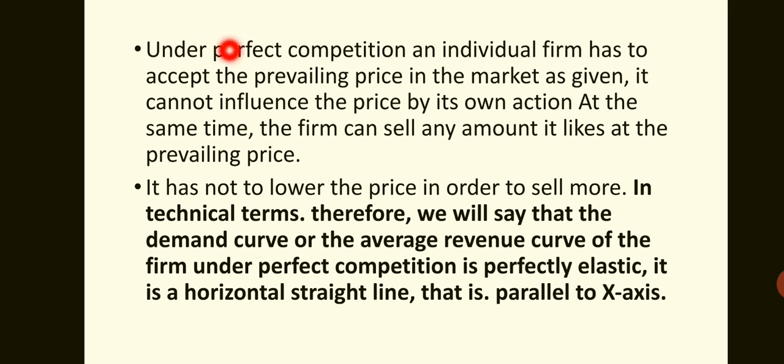Under perfect competition, an individual firm has to accept the prevailing price in the market as given — it cannot influence the price by its own action. At the same time, the firm can sell any amount it likes at the prevailing price. In perfect competition, a large number of sellers are available, and all the sellers are selling homogeneous products.